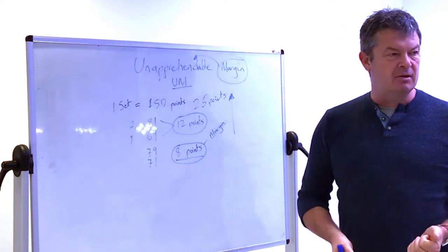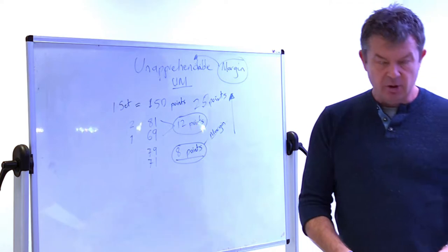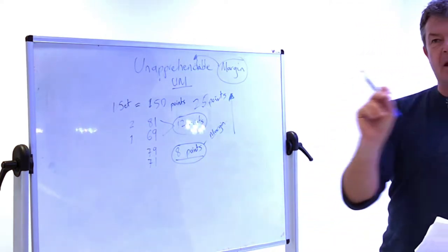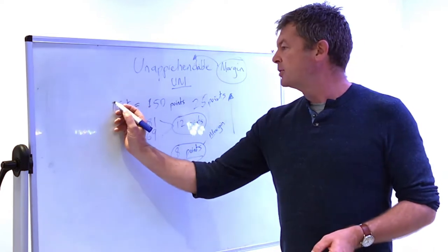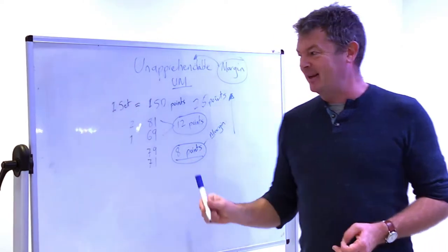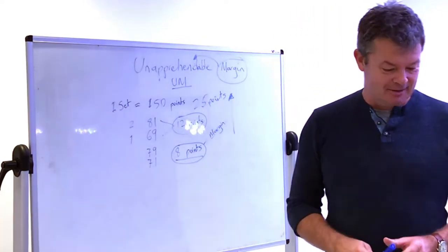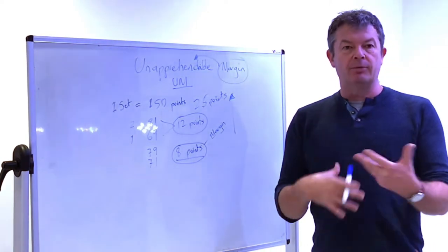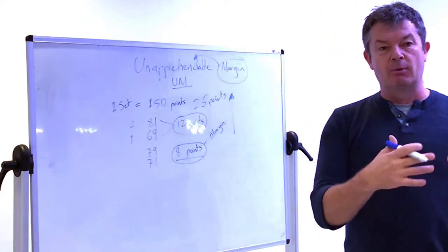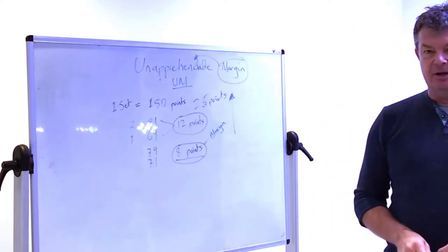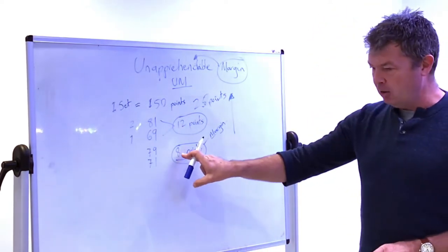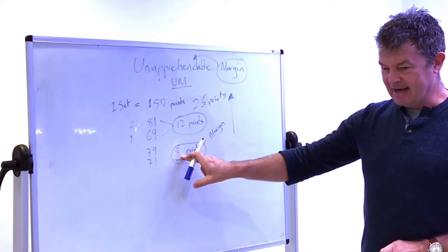So we know that players will say they think the difference is between 20 and 25 points after a set, which is quite a difference between it actually being eight points. That's one aspect of the unapprehendability. The second aspect is that you don't experience that kind of margin in a match.